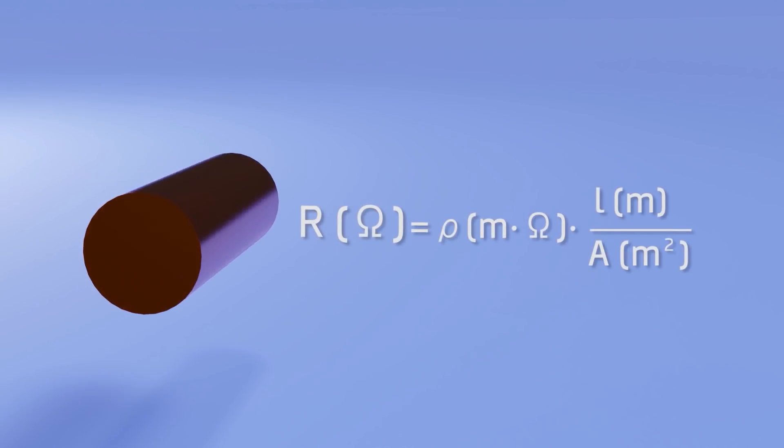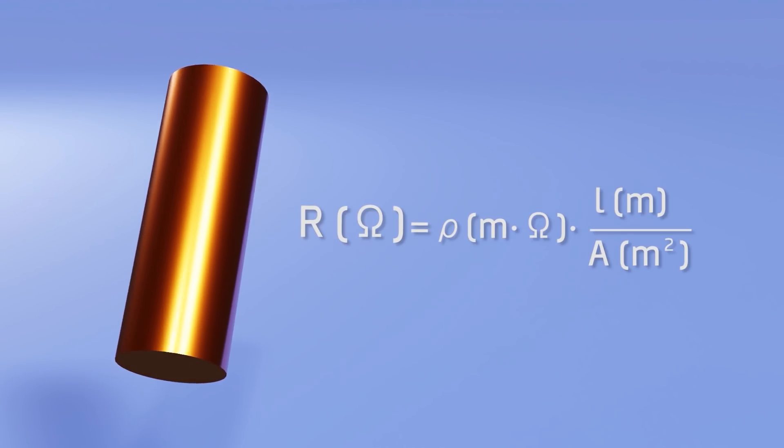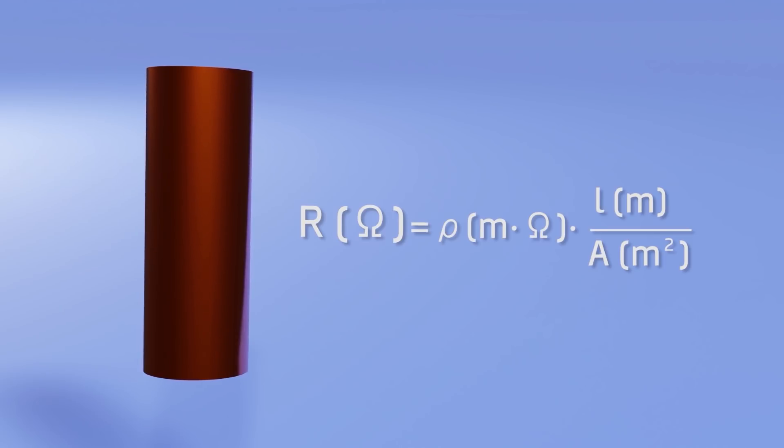Let's focus on the copper cable. The resistance of this cable will be equal to the coefficient of resistance multiplied by the length of the cable and divided by the area of its cross section. Let's make some analogies to understand more easily how each variable affects.